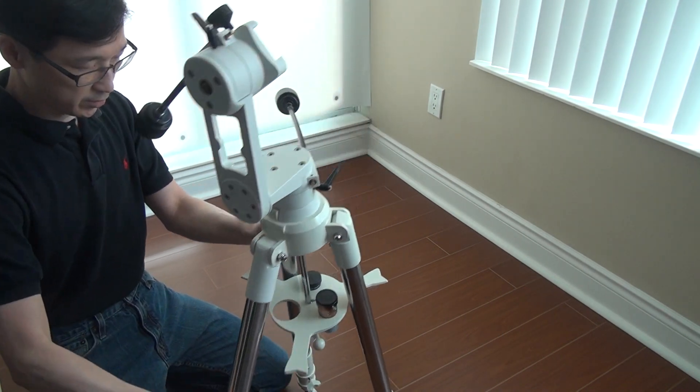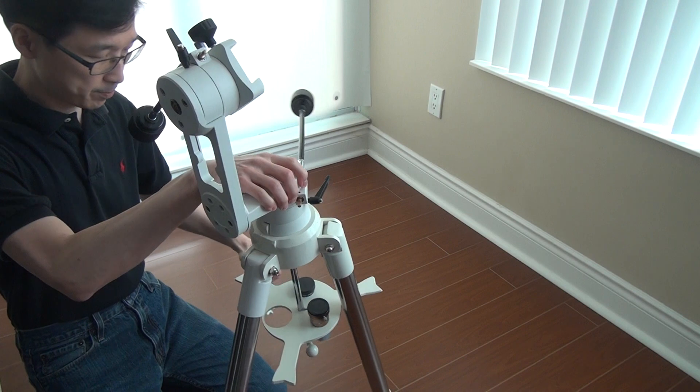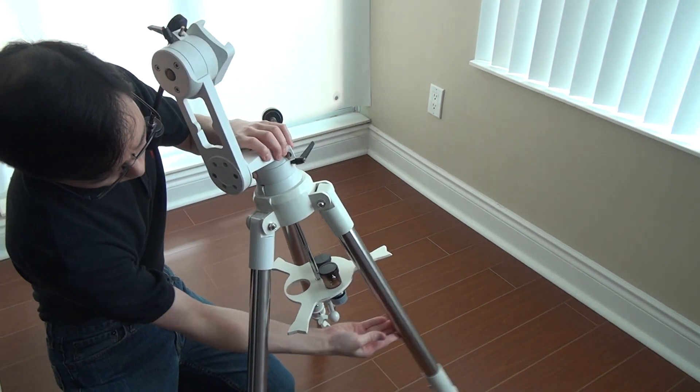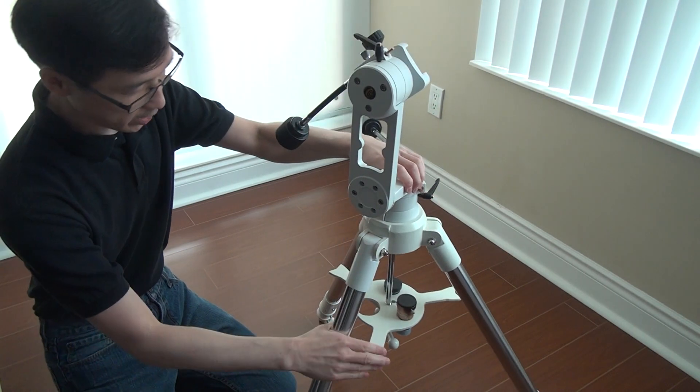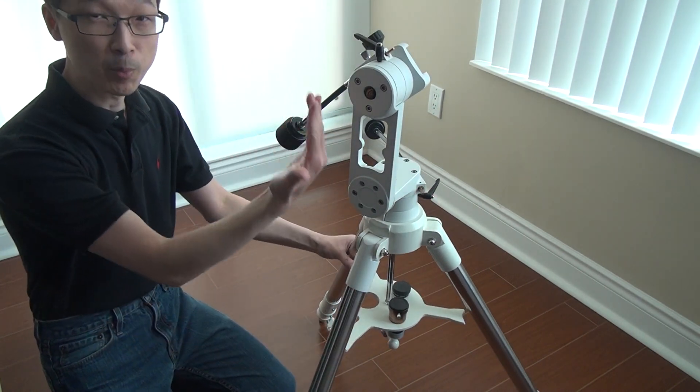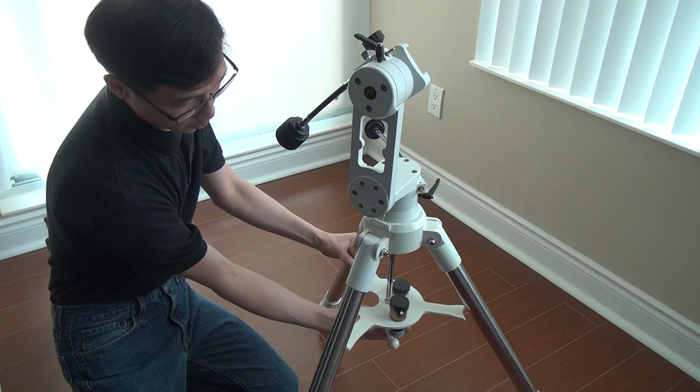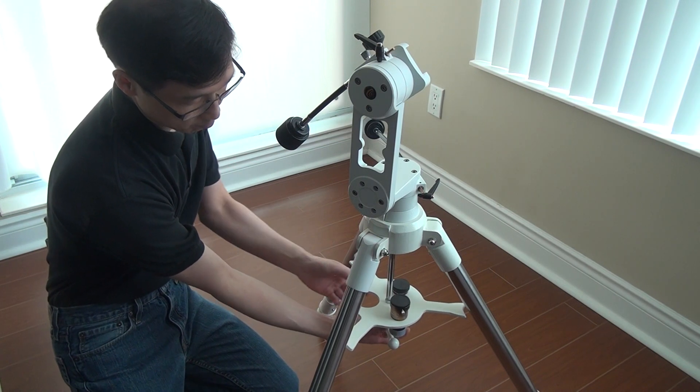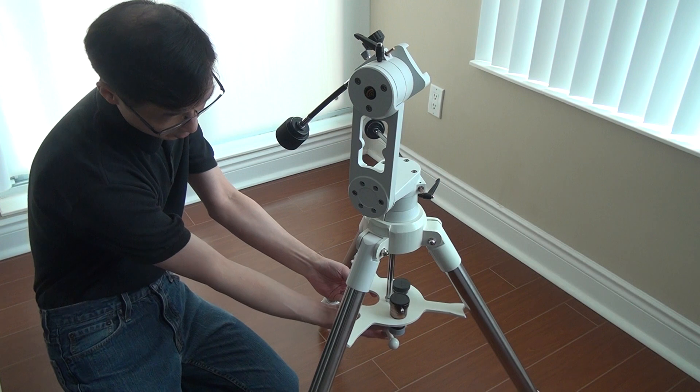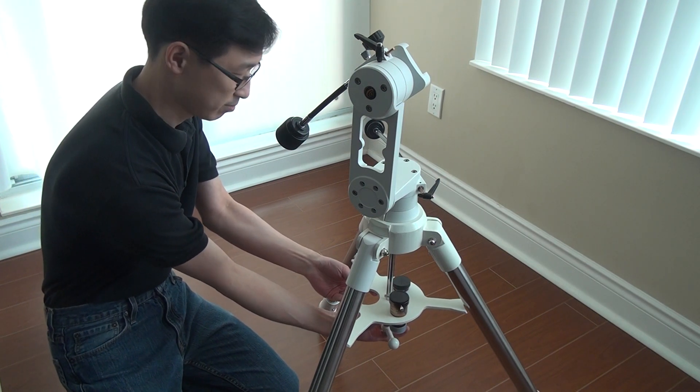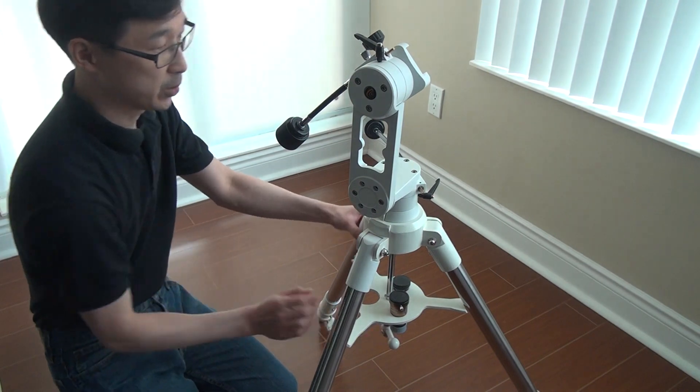So another question someone had is how to view almost vertical in the zenith position. So on a small telescope such as what I have, it's not a problem but it's also not ideal position, which I'll show you here.